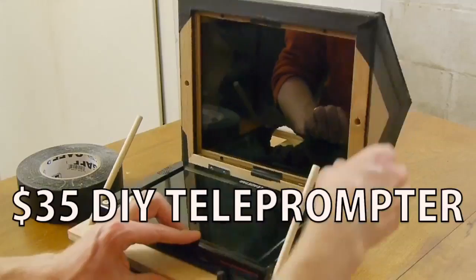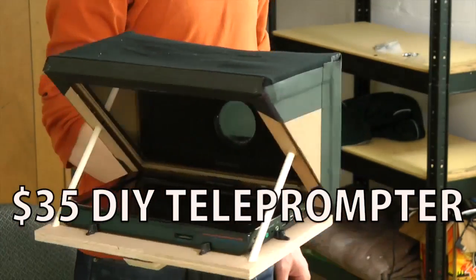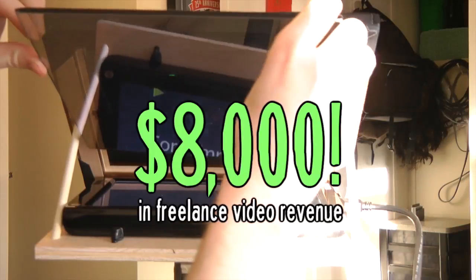$86? But Eric Beck built a light for half that price. I know, I know, but this design can output over six times as much light. And I like to think of my DIY projects as investments in my video business. Remember that $35 teleprompter I built? In just three months, that little device has earned me over $8,000.